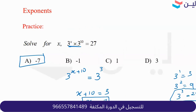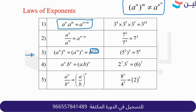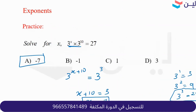A student asks: how did 3x plus 10 become x plus 10? We applied the product rule — because we have 3 to the x times 3 to the 10, it becomes 3 to the x plus 10.